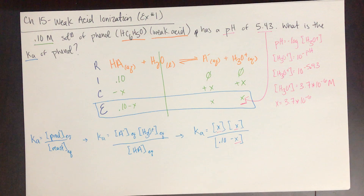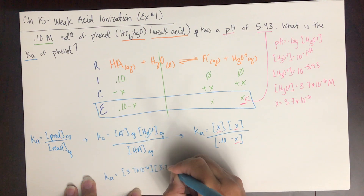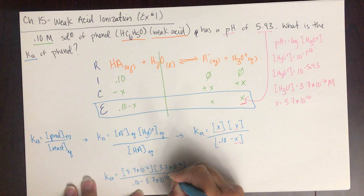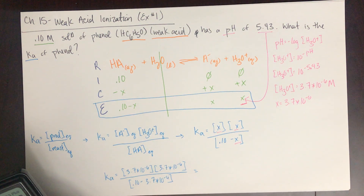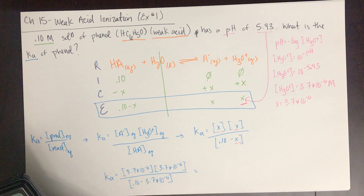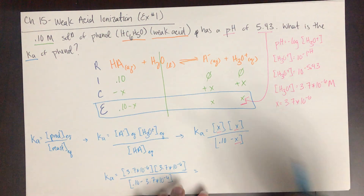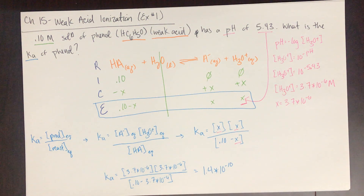Now I can plug x into the Ka expression: Ka equals (3.7 × 10⁻⁶) times (3.7 × 10⁻⁶) over (0.10 minus 3.7 × 10⁻⁶). Solving this gives approximately 1.4 times 10 to the negative 10, and that is the Ka for phenol.